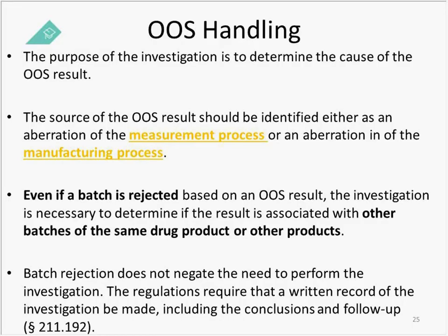The purpose of the investigation is to determine the cause of the out-of-spec result. The source should be identified either as an aberration of the measurement process — meaning something went wrong in measurement — or an aberration in the manufacturing process, meaning a deviation happened in manufacturing. Even if a batch is rejected based on an out-of-spec result, the investigation is still necessary and required by GMPs to determine if the result is associated with other batches of the same drug product or other products.